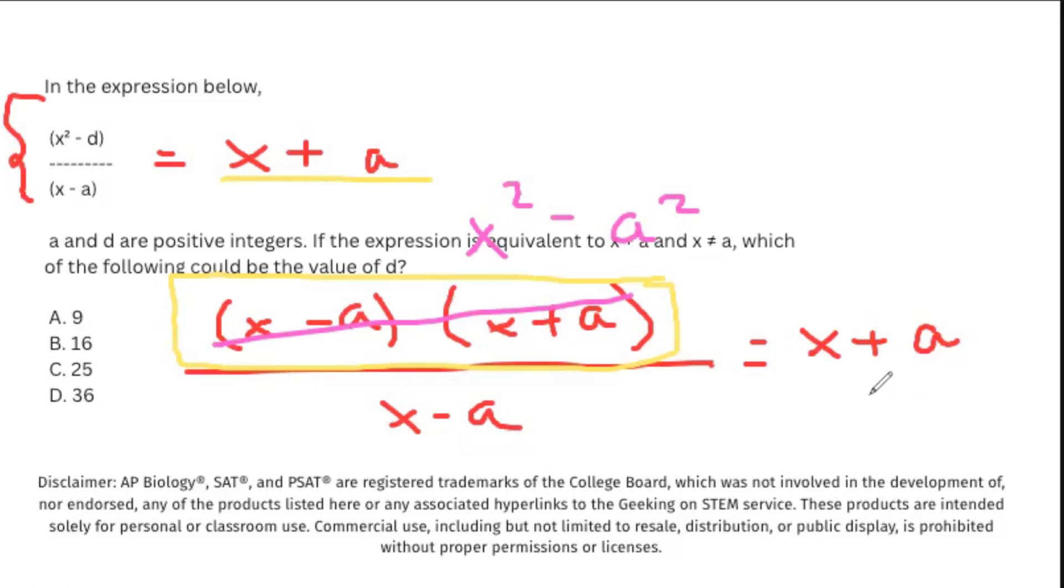We can essentially say that we can replace this a squared with d. So we could say d is the same thing as a squared. Knowing that information, we can go ahead and evaluate what we're looking for, because it says which is the value of d, which one is a possibility.